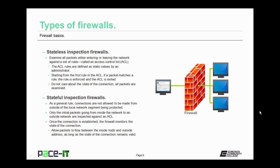There are stateless inspection firewalls. These examine all the packets either entering or leaving the network against a set of rules called an access control list, or ACL. The ACL rules are defined as static values by an administrator. All packets are examined against the rules in the ACL starting with the first rule. If a packet matches a rule, that rule is enforced and the ACL is exited. Stateless inspection firewalls do not care about the state of the connection — they only care about the packets, and all packets are examined.